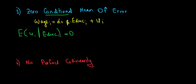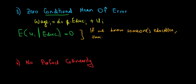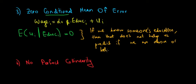Let me say it in common words and then we'll understand why this makes sense. So this is the same as saying if we know someone's education then that does not help us predict if we are above or below the regression line. Again let's see if that makes sense to what we wrote here. If we know someone's education, so literally given a certain education level, we cannot know if we are above or below the regression line.